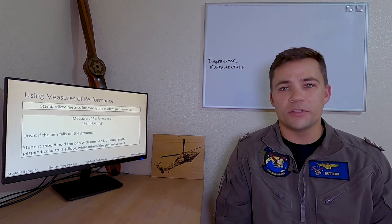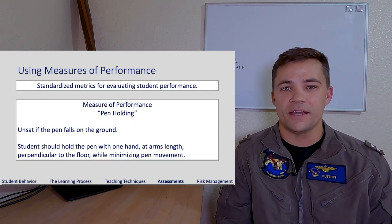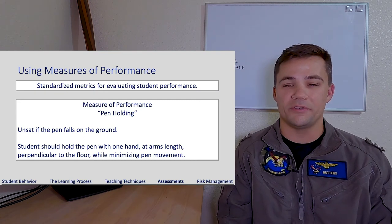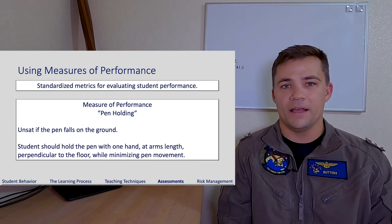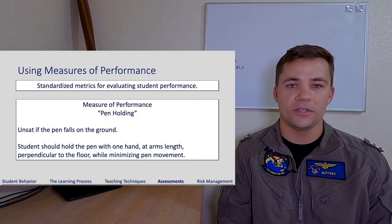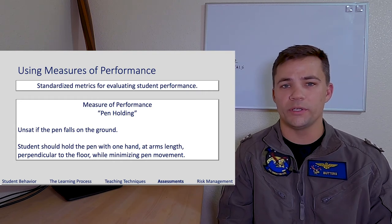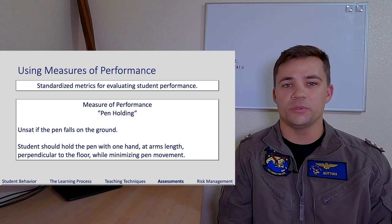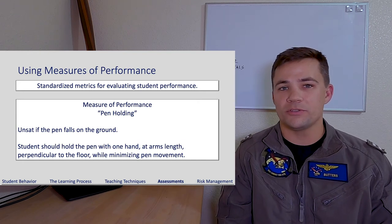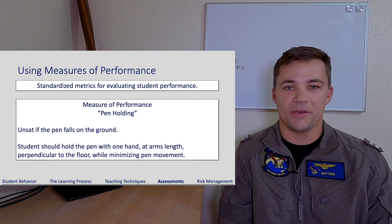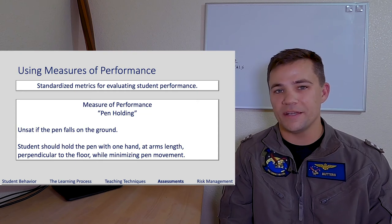This is why we use measures of performance — they're standardized metrics for evaluating student performance, found in the .6 and .7 curriculum. On the FAA side, they're included in what's called Airman Certification Standards, formerly called Practical Test Standards. FAA ACS standards only apply for check rides — their STAN eval equivalents — but some more formalized schools also employ curriculums like ours where each individual event is assessed along measures of performance. We keep these measures of performance generic, partly for open discussion, but also because how we apply them matters more than the specific measure itself.